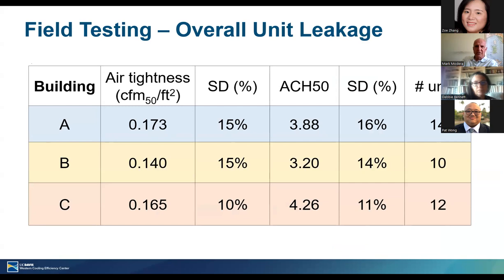Here are the leakage results in more detail. In building A — affordable housing with a 0.3 CFM target — that's where it landed. Building B had no tightness target but was modular construction. Building C had a tightness target of 0.23 and clearly beat that. This is the standard deviation I referred to earlier. We also expressed results in air changes at 50 Pascals, and those don't exactly scale because the surface-to-volume ratio is not the same for all units.